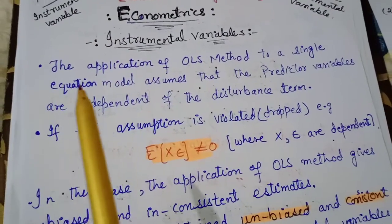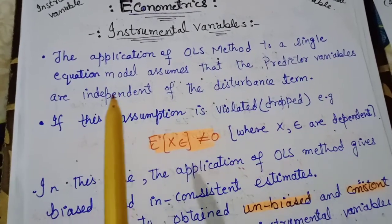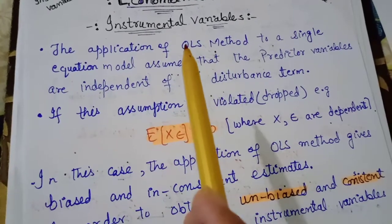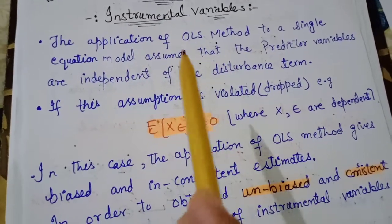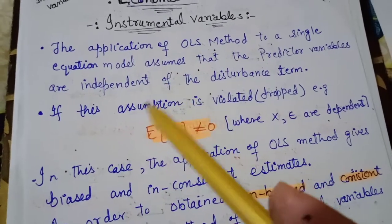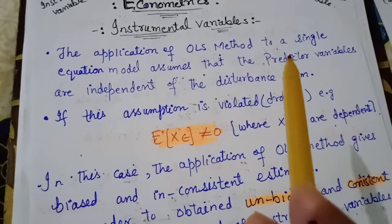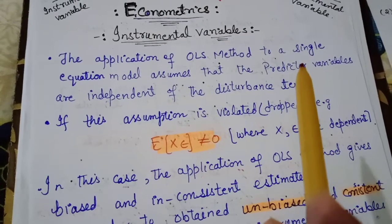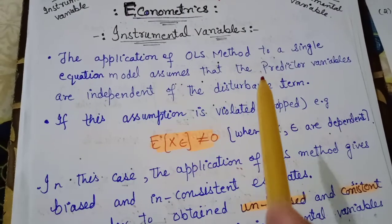Let us start. The application of the OLS method to a single equation model assumes that the predictor variables — such as X1, X2, X3, which can represent income, height, weight, rainfall, etc. — are independent of the disturbance term.